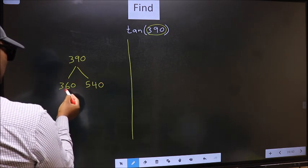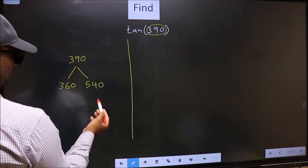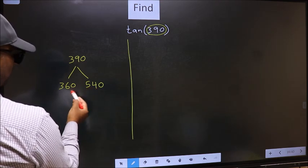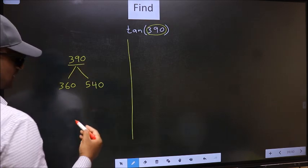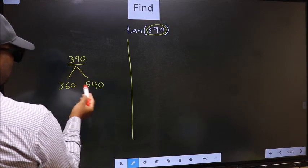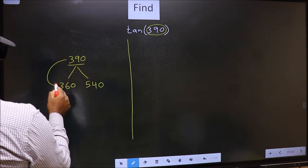This is 180 into 2 and this is 180 into 3. Between these two numbers 390 lies. Next, 390 is close to which number? This is close to 360.